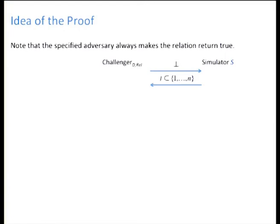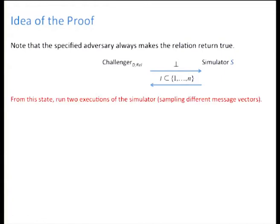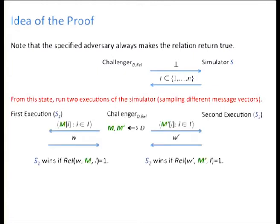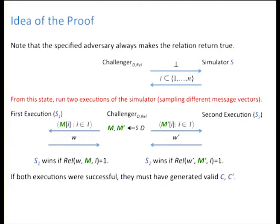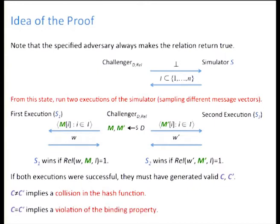Now suppose that some simulator could also make the relation return true with high probability. We will show that this would imply that either the simulator can be used to break the collision resistance of the hash function, or to violate the binding condition of the commitment scheme. The idea is to execute the simulator until the point where it selects the set of senders to be corrupted, and then run two different executions sampling different message vectors. We can use the reset lemma to relate the winning probability of the original simulator to the probability that both executions succeed and have at least one message that differs in the open positions. But if this is the case, then either the ciphertext vectors are different — implying a collision in the hash function — or the ciphertext vectors are equal, implying a violation of the binding condition.